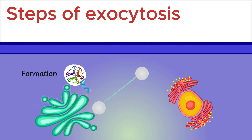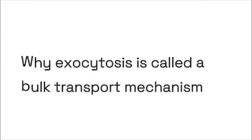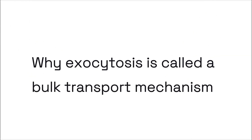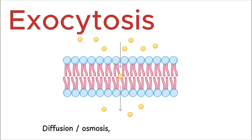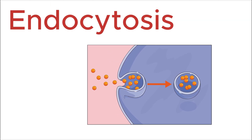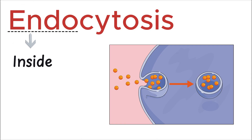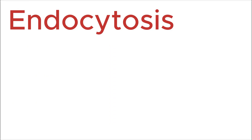That brings us to the end of the topic on exocytosis. But before you go, let's understand why exocytosis is called a bulk transport mechanism — it's because it transports large quantities of materials at once, unlike other transport methods like diffusion or osmosis, which handle only small molecules. Cells also perform the opposite process known as endocytosis; 'endo' means 'inside,' and in endocytosis, materials move into the cell. This is also a type of bulk transport. To learn more about endocytosis in detail, watch the next video.